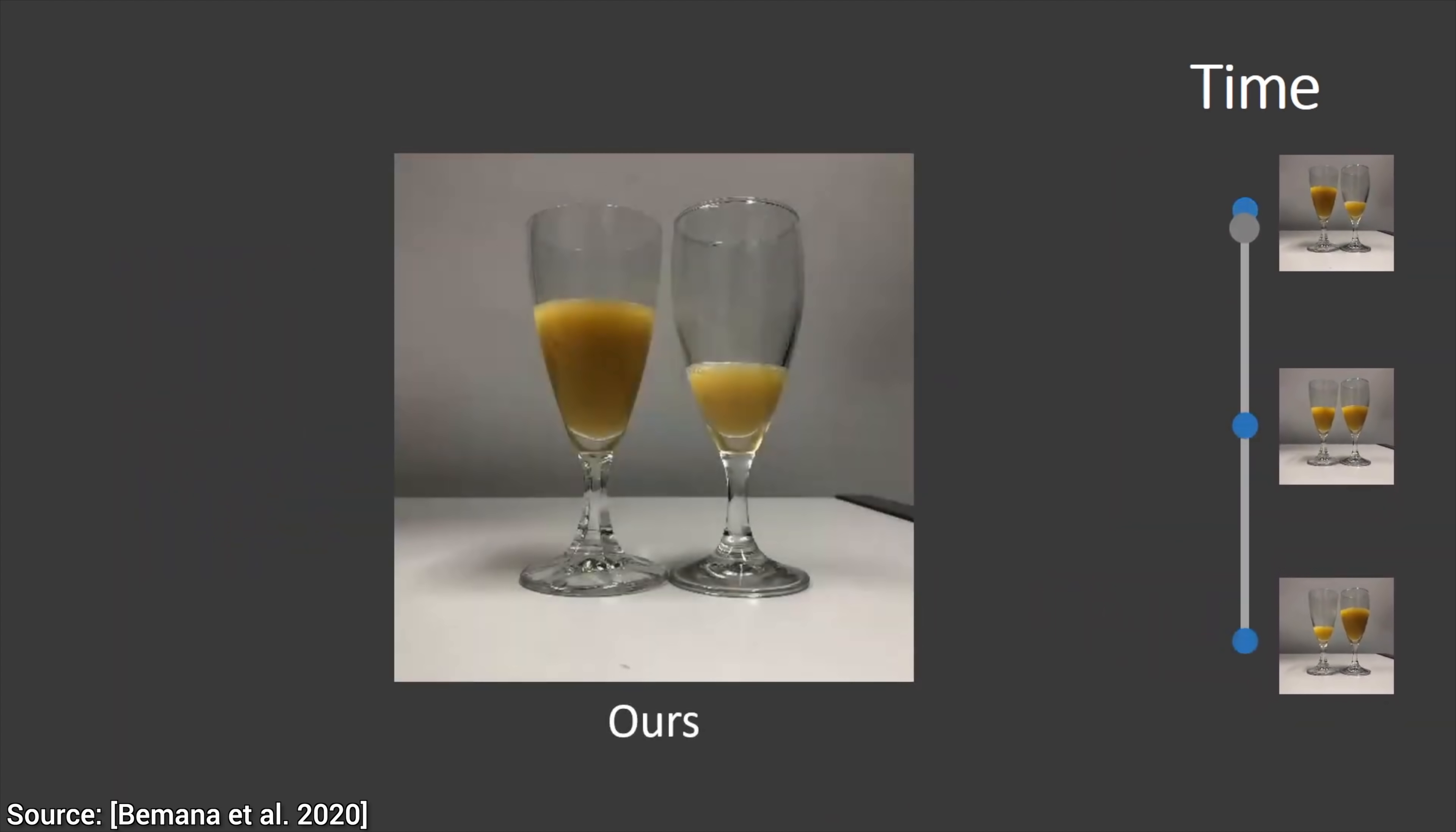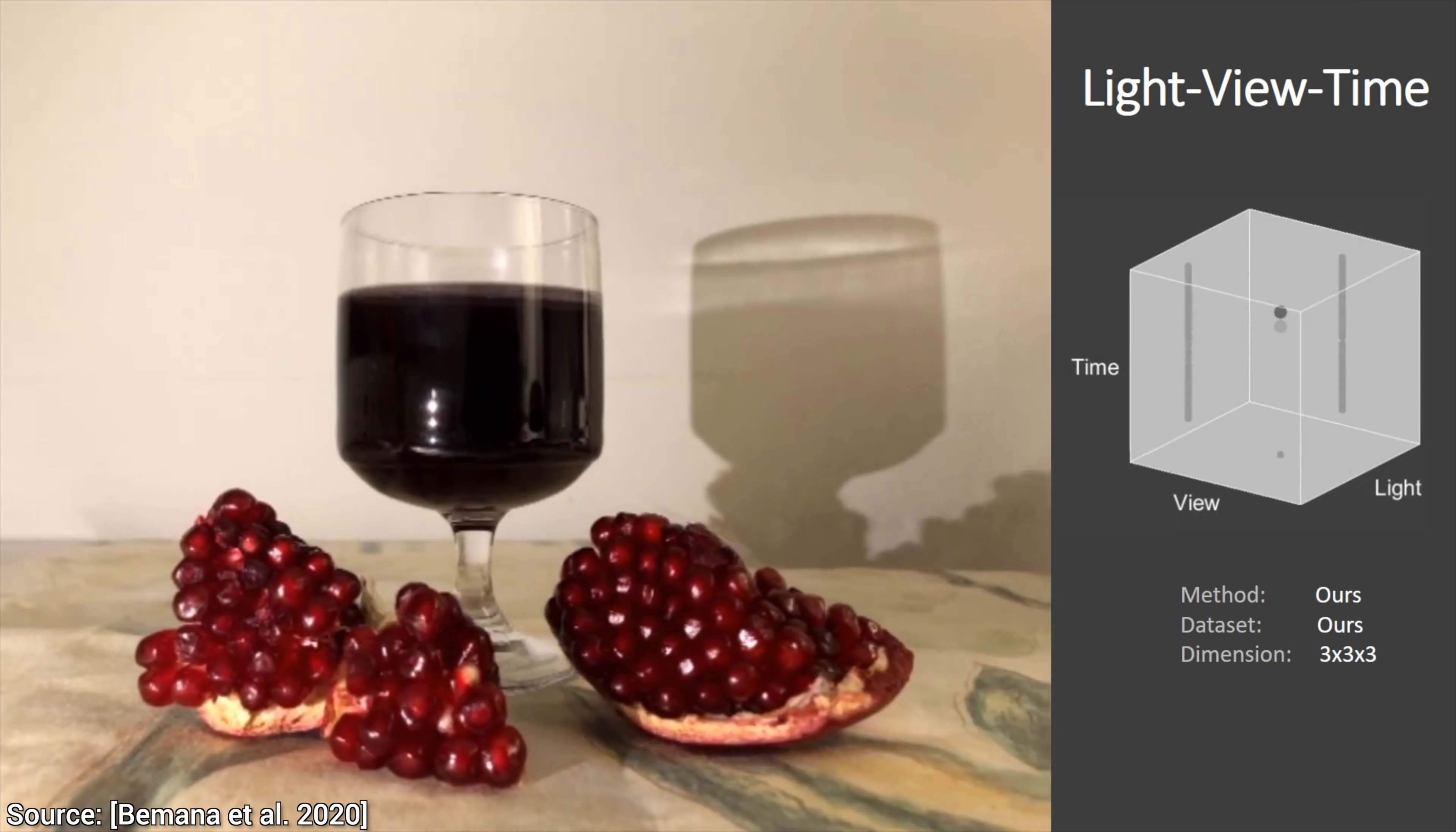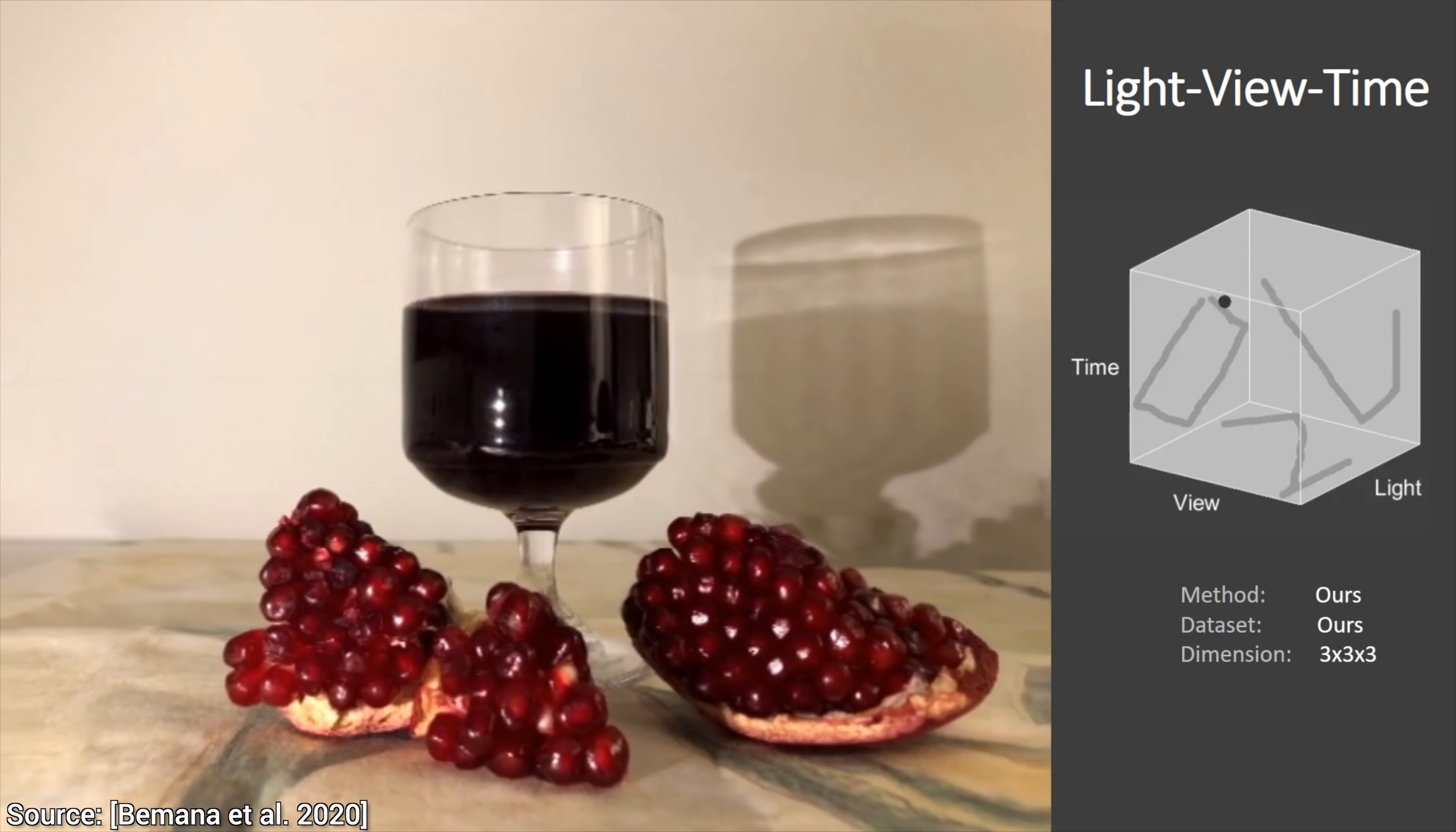we can indeed change the time, and the view direction, and the lighting separately. Or, even better, do all three at the same time. Woohoo! Look at how we can play with the time back and forth, and set the fluid levels as we desire, that is the time part, and we can also play with the other two parameters as well at the same time.